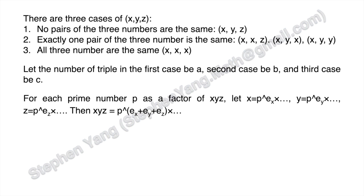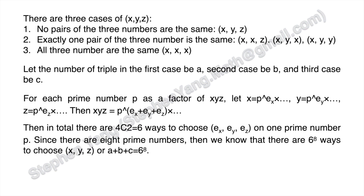Let's find a plus b plus c. For each prime p that is a factor of x, y, z: let x equal p to the e_x power times something not involving p, y equal p to the e_y power times something not involving p, and z equal p to the e_z power times something not involving p. Then xyz equals p to the (e_x plus e_y plus e_z) power times something not involving p. There are C(4,2) = 6 ways to choose e_x, e_y, e_z for each prime. Since there are 8 prime numbers, a plus b plus c equals 6 to the 8th power.